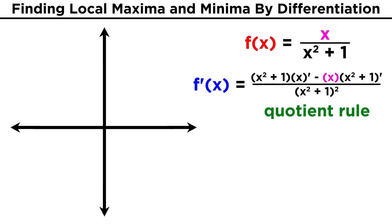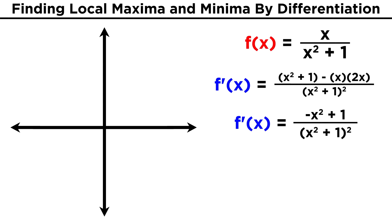Remember, it's bottom times the derivative of the top, minus top times the derivative of the bottom, over bottom squared. Here, that gives us this, and we can simplify to get negative x squared plus one on top.